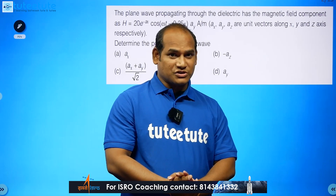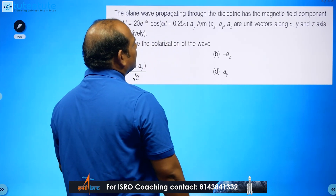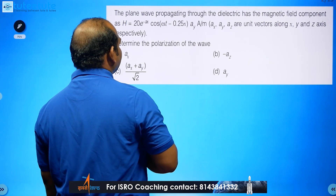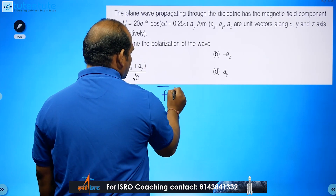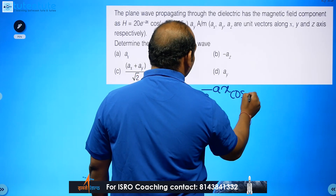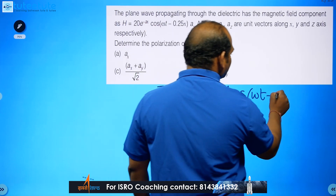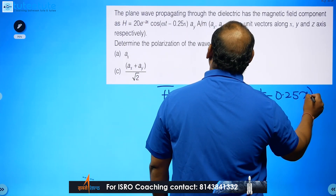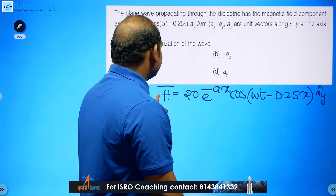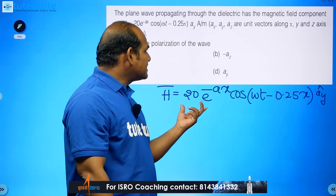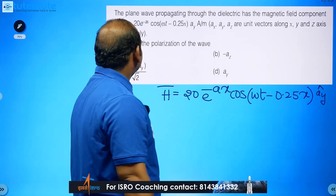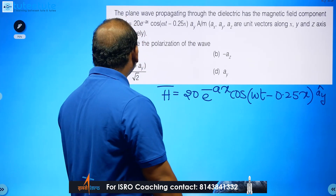We are going to see EMTL questions which are previous ISRO questions. The first question: a plane wave propagating through a dielectric has the magnetic field component H-bar equal to 20 e^(-ax) cos(ωt − 0.25x) in the ay direction, measured in amps per meter. ax, ay, az are unit vectors along x, y, z axes respectively.